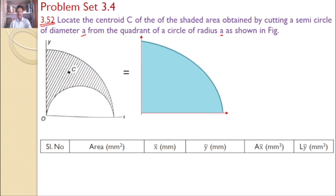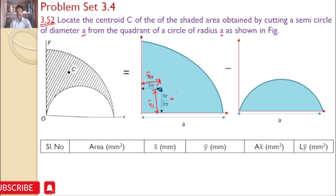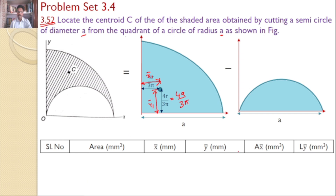I am considering a quarter circle of radius A minus a semicircle of diameter A. The centroid for the quarter circle is at X1 bar and Y1 bar. From the fundamentals, X1 bar and Y1 bar for the quarter circle are the same, with the value 4R by 3π, where radius equals A, giving 4A by 3π.